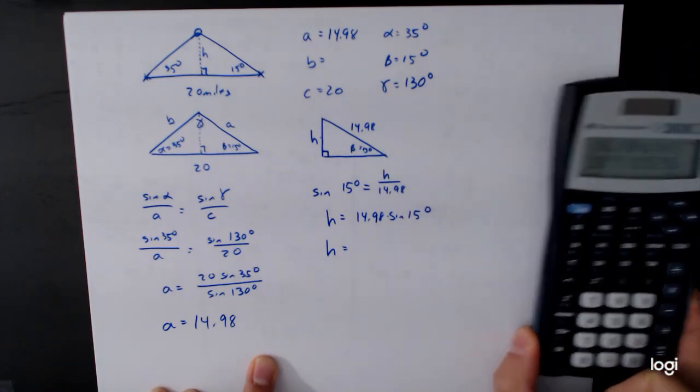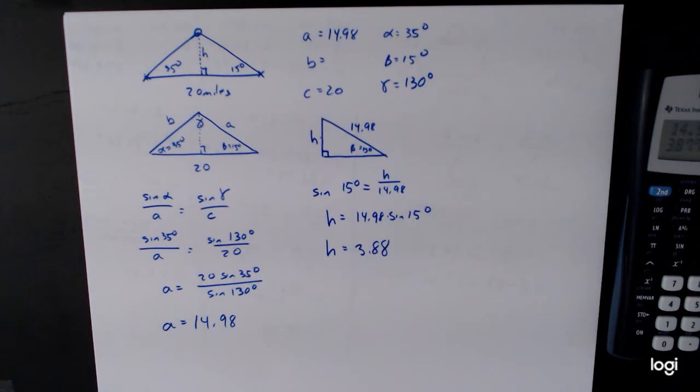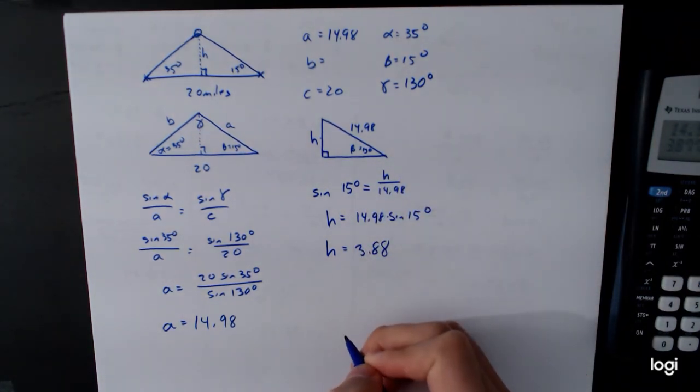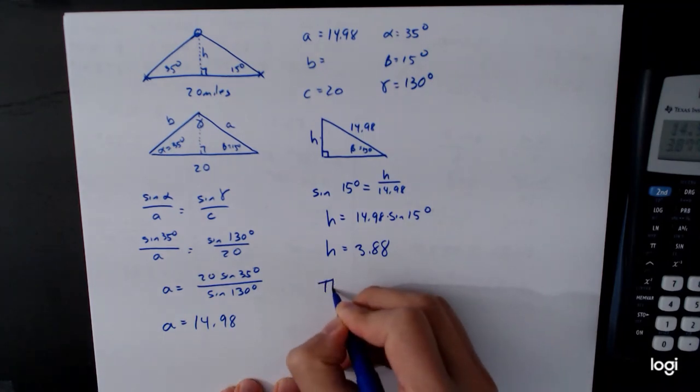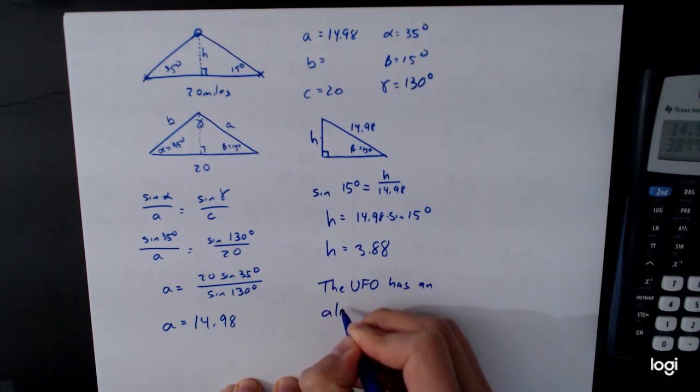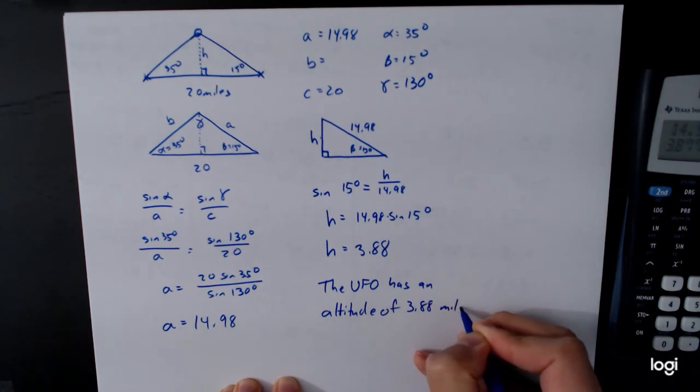3.88. And so our answer is that this altitude has an altitude of 3.88 miles. The UFO has an altitude of 3.88 miles.